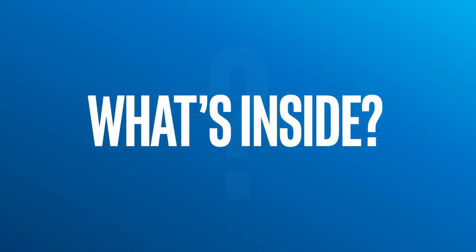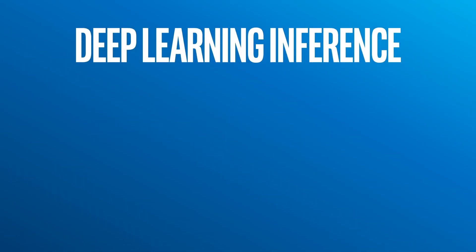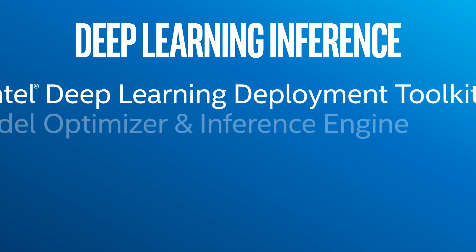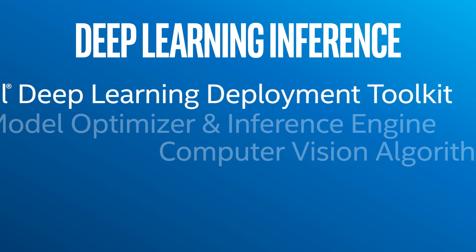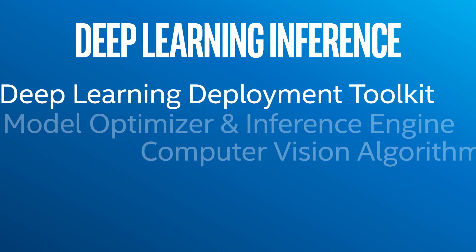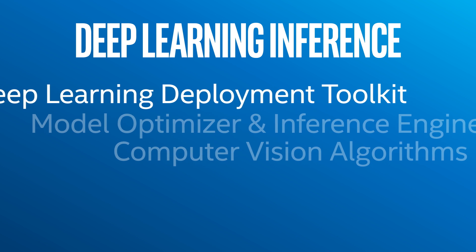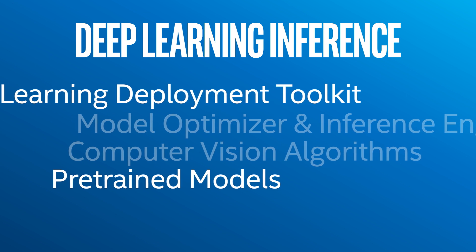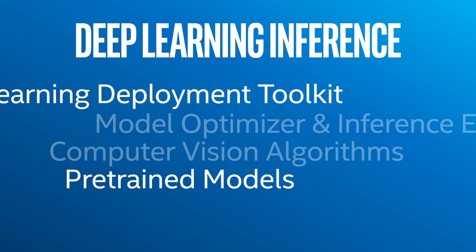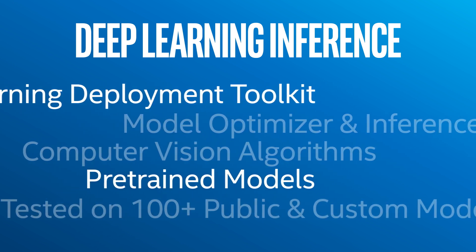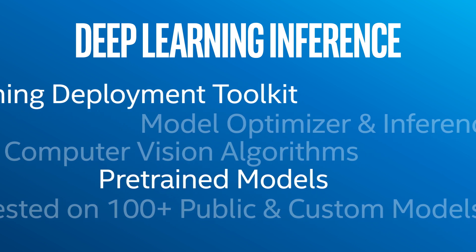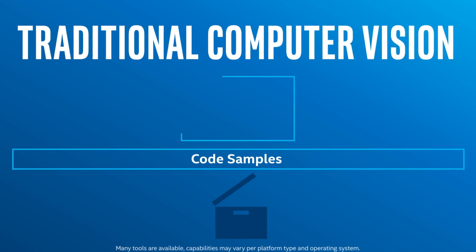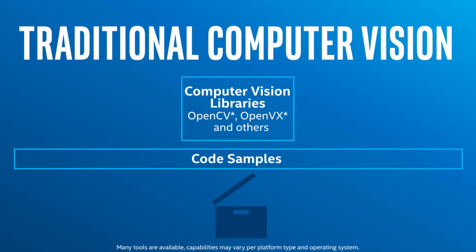So what tools are inside? The OpenVINO Toolkit includes the Intel Deep Learning Deployment Toolkit with a model optimizer and inference engine that help integrate high-performance deep learning inference. Save significant time and resources with the included pre-trained models and code samples. You can also be confident with your deployment, as the OpenVINO Toolkit was tested and validated on more than 100 public and custom models. Plus, you'll save time building key application features with computer vision libraries, including optimized OpenCV.